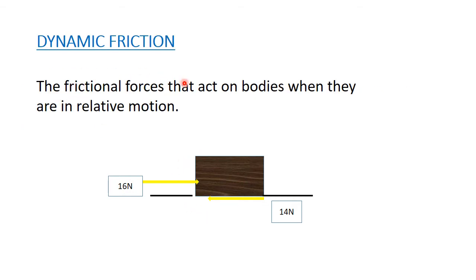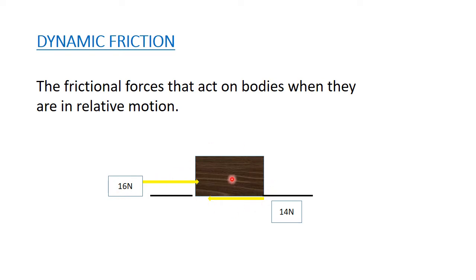Dynamic friction is the frictional force that acts on a body when it is in relative motion. We are pushing this block of wood along the table and it starts to move — that is dynamic friction, because it is moving. We are exerting 16 Newtons in one direction, but the table cannot exceed the limit — so dynamic friction is 14 Newtons. Because of the net force, the object begins to move.